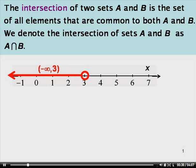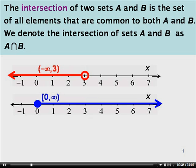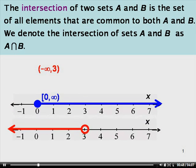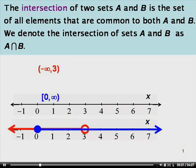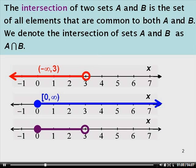Here's a graph of the interval negative 1 to 3 where 3 is not included. Here's a graph of the interval from 0 to infinity where 0 is included. What do these two graphs have in common? We're thinking about the intersection of these two intervals. It looks like these two graphs overlap from 0 to 3 where 0 is included but 3 is not included. So the intersection of the interval negative 1 to 3 with 0 to infinity where 0 is included is the half open interval from 0 to 3 where 0 is included but 3 is not included.